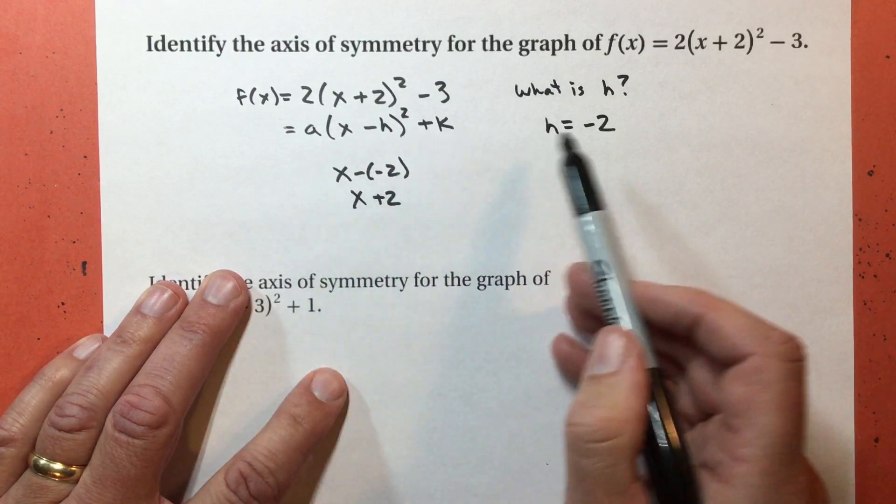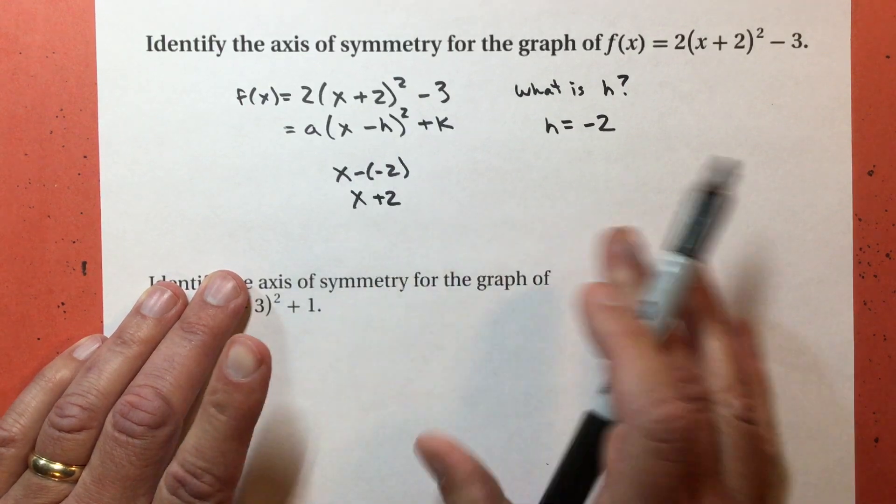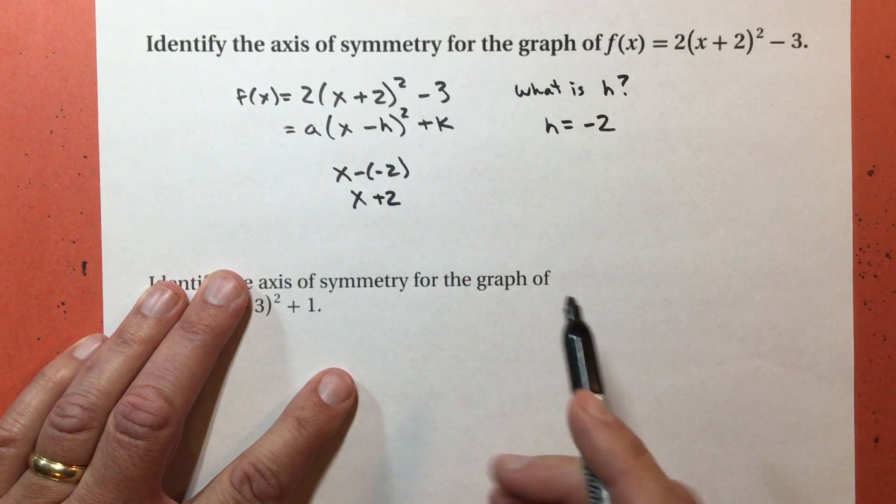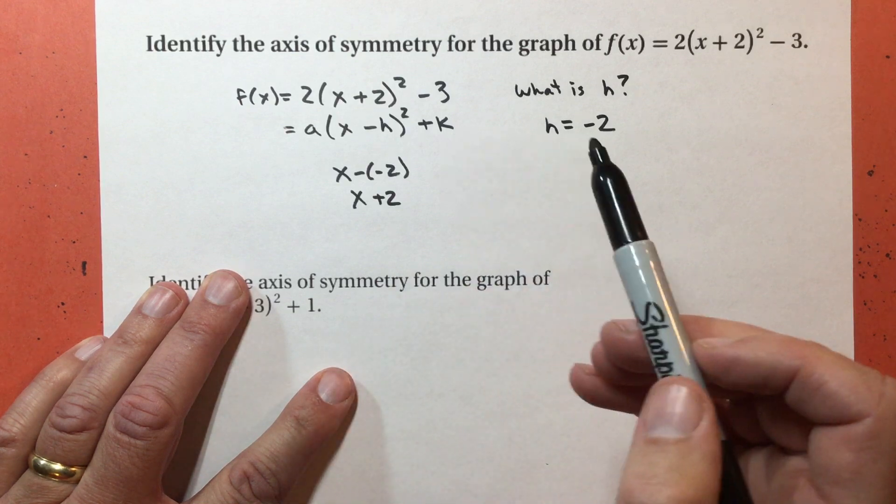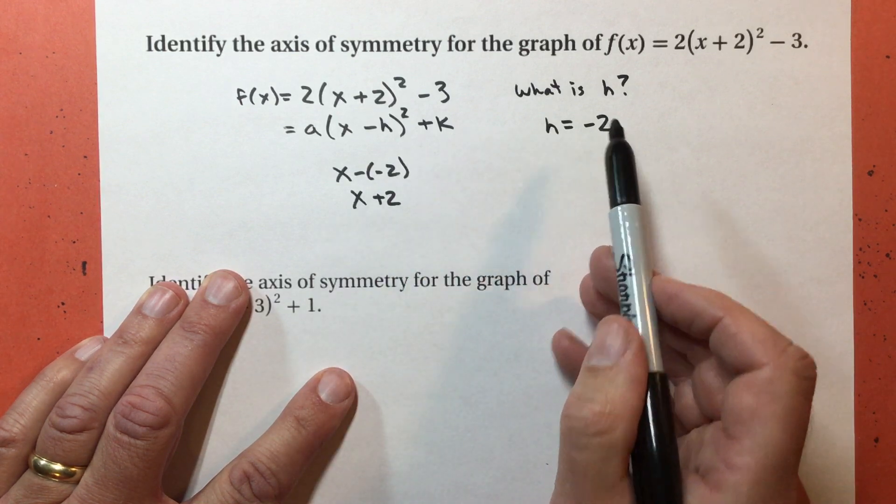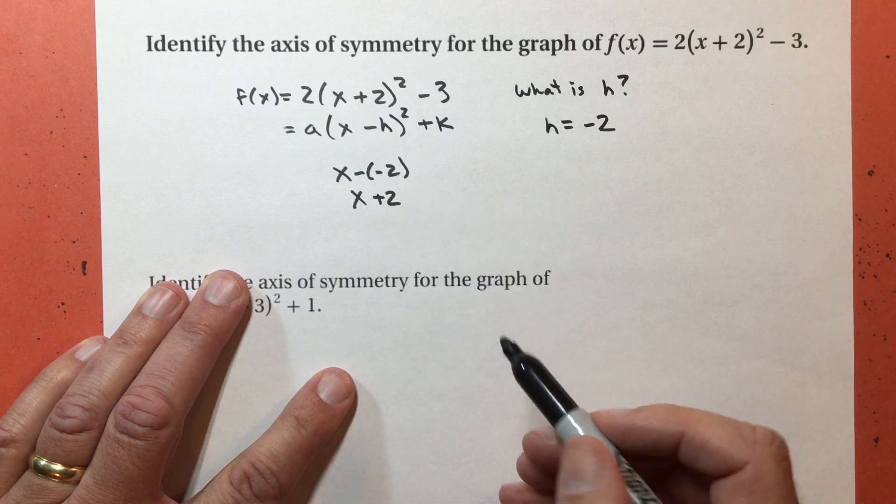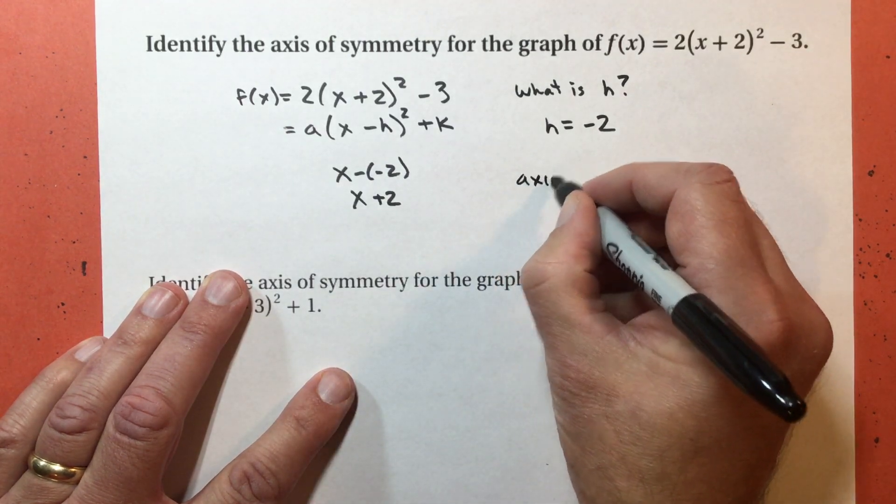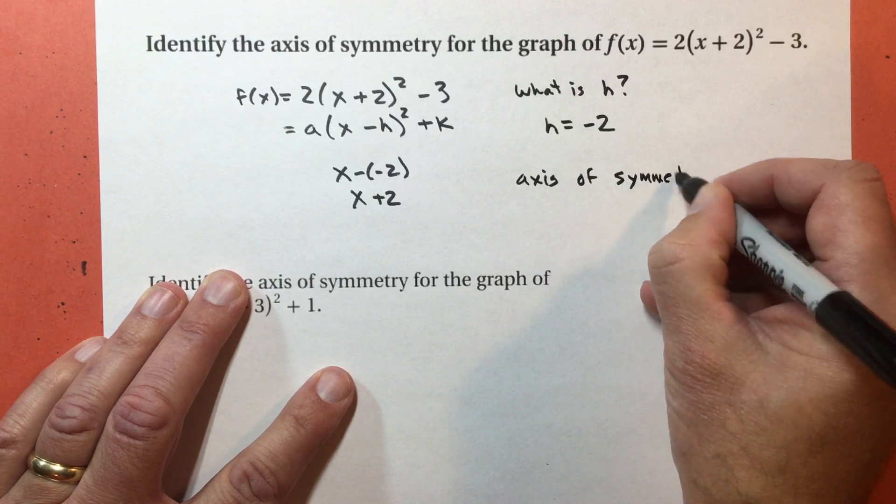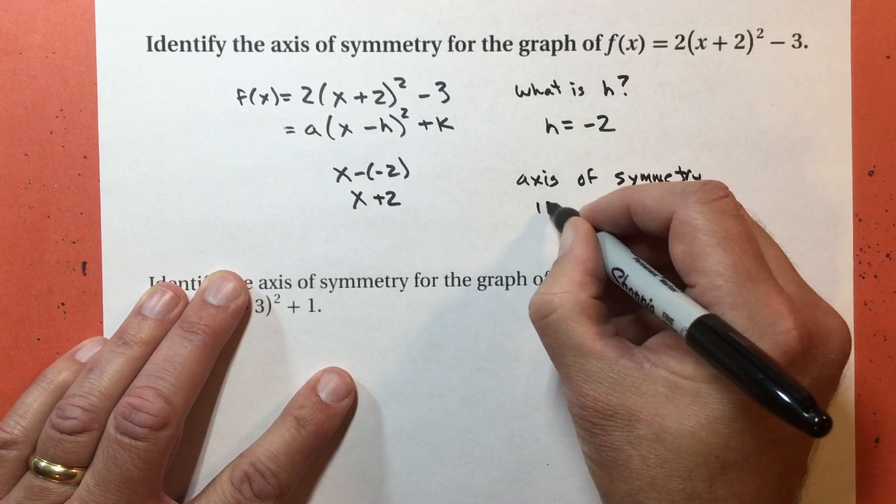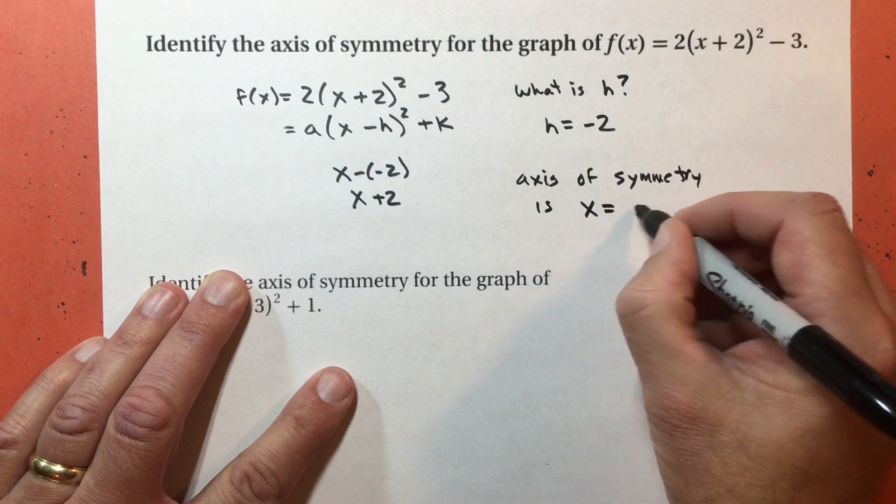Wherever my graph is, and I know the vertex is at (-2, -3), the axis of symmetry goes through the vertex. The x value of the vertex, the h, is the number that I use. So the axis of symmetry is x = -2.